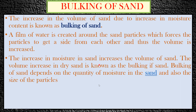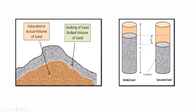The bulking of sand depends on the quantity of moisture present in the sand and also on the size of the particles. This is the saturated or actual volume of sand, and when there is moisture content in the sand, you can see the volume has increased. Let us say this is my dry sand — since the volume of sand has increased due to addition of water, this is called bulking of sand or bulk sand.